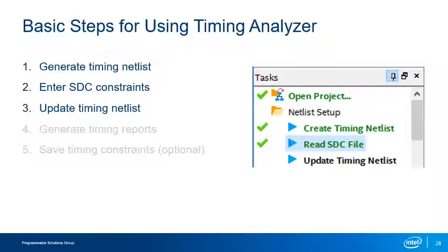The three steps — creating the netlist, reading in SDC constraints either from a file or the console, and updating the netlist — are required every time the Timing Analyzer is started and any time a constraint is added or changed. The steps are listed at the top of the task pane for easy access. Note that if the SDC file name matches the project name, you can skip step 2 and immediately update the netlist; the tool will automatically read in the correct .sdc file.